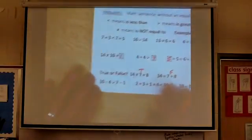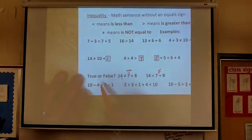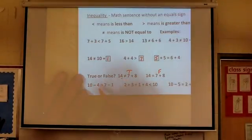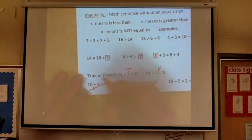How about this one? 10 minus 4 is greater than 7 minus 1. They're actually equal, aren't they? This is 6, that's 6. So this one is not true. That's false.